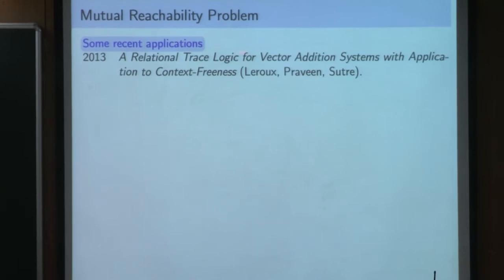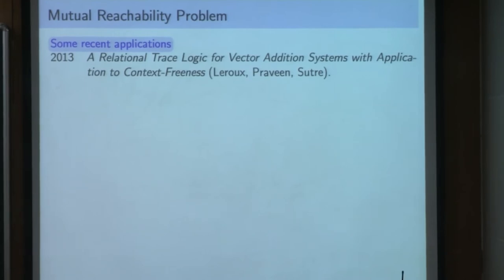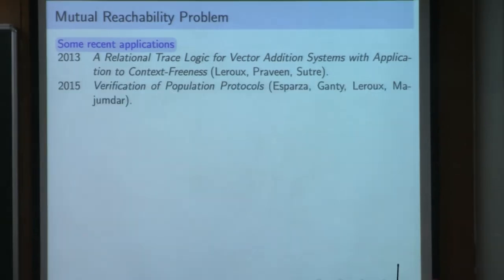With Greg Wornil and Pravin, we proved that thanks to the mutual reachability problem we can introduce a logic over the traces of a Petri Net that is decidable in exponential space. This logic provides a uniform way to express properties like: this place is unbounded, or those two places are simultaneously unbounded, or the language accepted from an initial configuration is regular or context-free. All those problems can be described with simple formulas in that logic. With Javier Esparza, Pierre Ganty, and Rupak Majumdar, we also proved that the verification of population protocols - deciding if a population protocol is well-specified - can be reduced to a mutual reachability question.